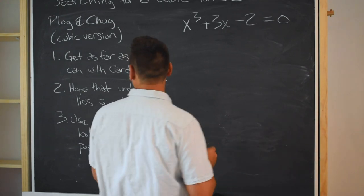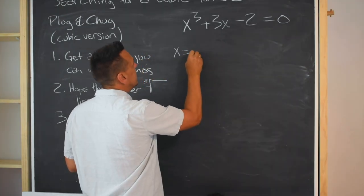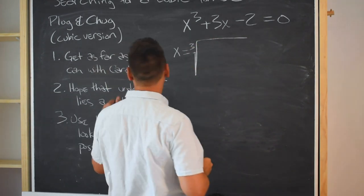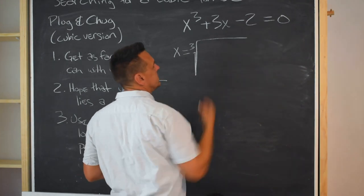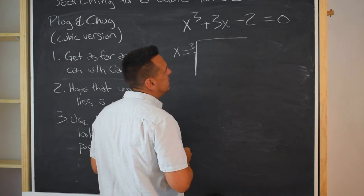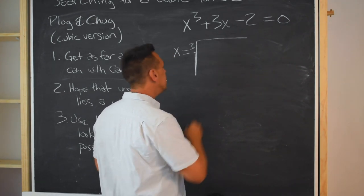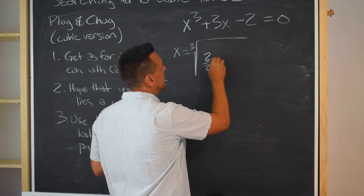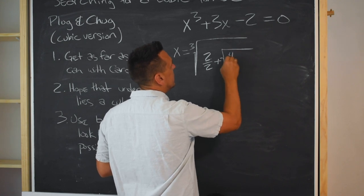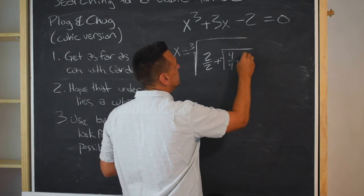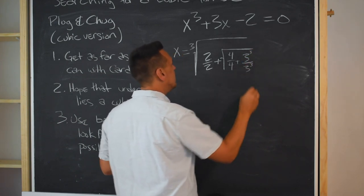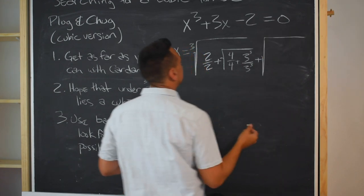So again, we're going to use Cardano's formula first. x equals, and I can't, so I'll have to pause the video and look it up probably. All right, so minus q, and I've already written this one in standard form. So minus q is positive 2, 2 over 2, plus the square root of q squared, so 4 over 4, plus p cubed, p is 3 over 27, or also 3 cubed. Now are you beginning to see why I picked this example?